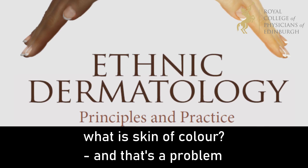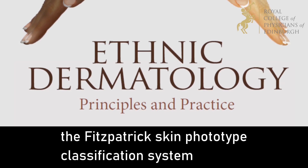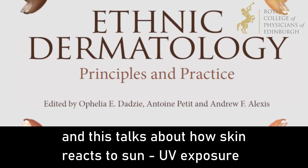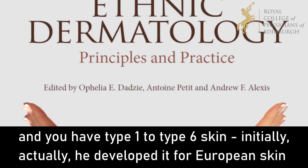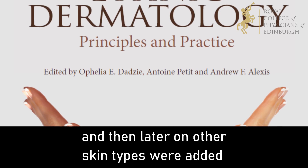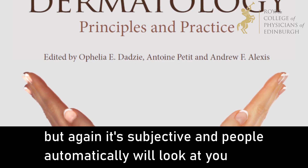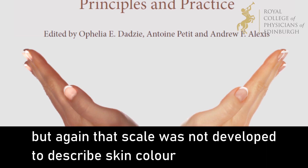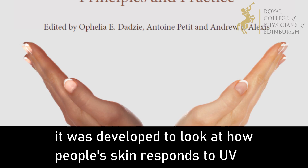In dermatology, we used to default to something called the Fitzpatrick skin phototype classification system, developed by Thomas Fitzpatrick, a professor of dermatology in the US. This describes how skin reacts to sun UV exposure, with type one to type six skin. Initially he developed it for European skin, and then later other skin types were added. But again, it's subjective — people will automatically look at you, where you're from, and assume you must be of a certain skin type. They will look at me and say you must be skin type six because I have dark skin.